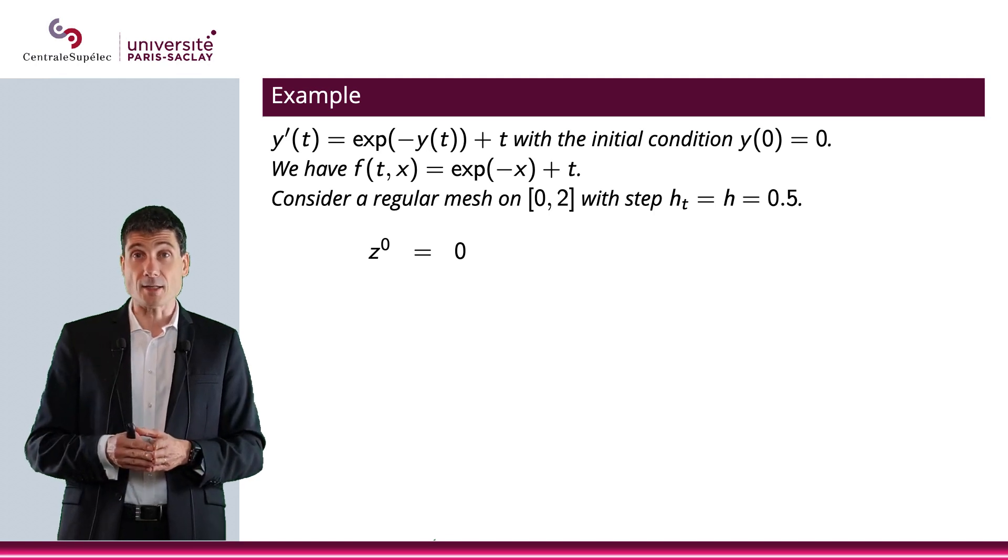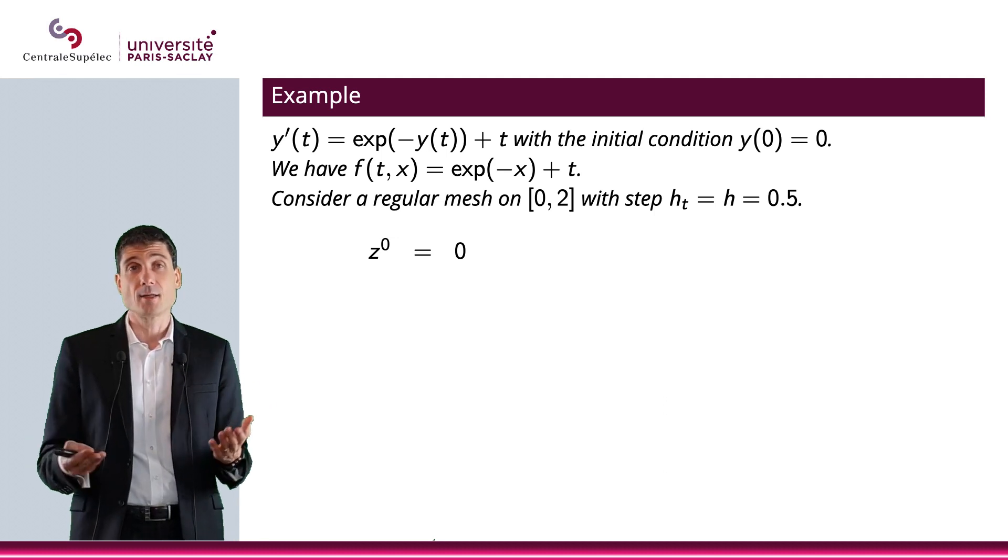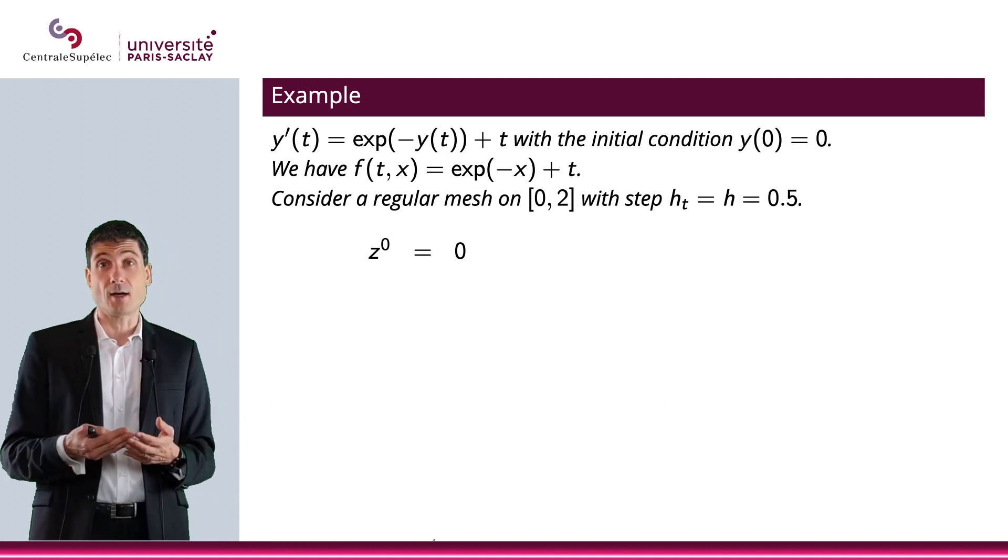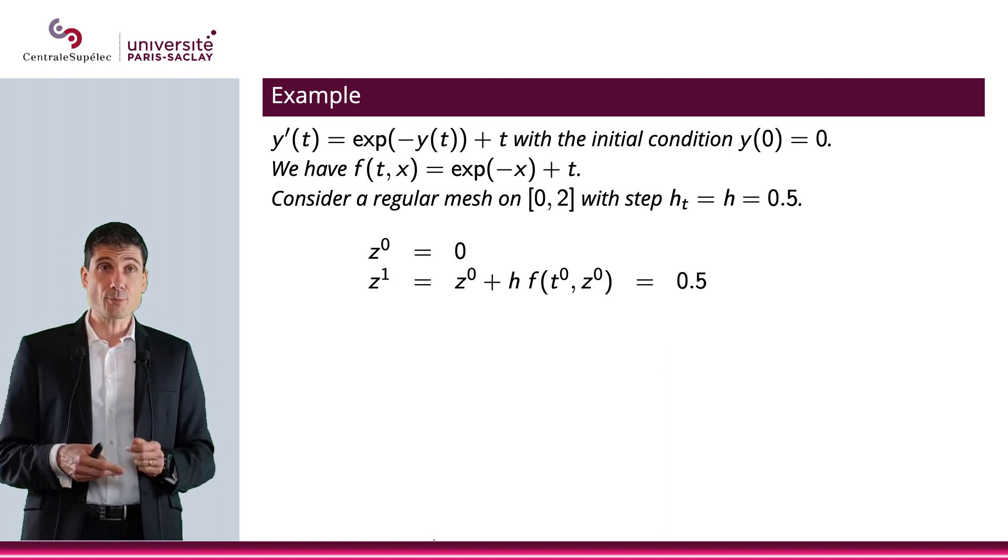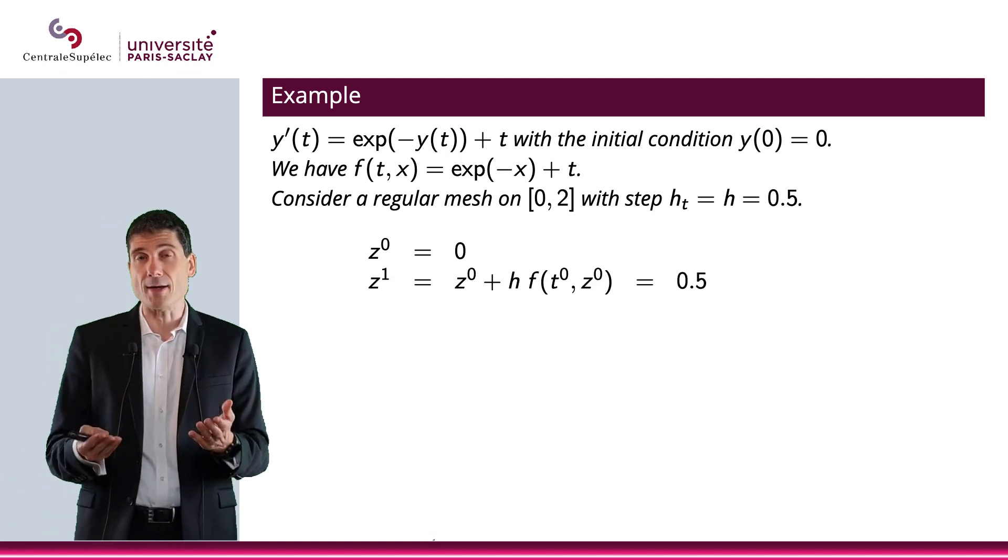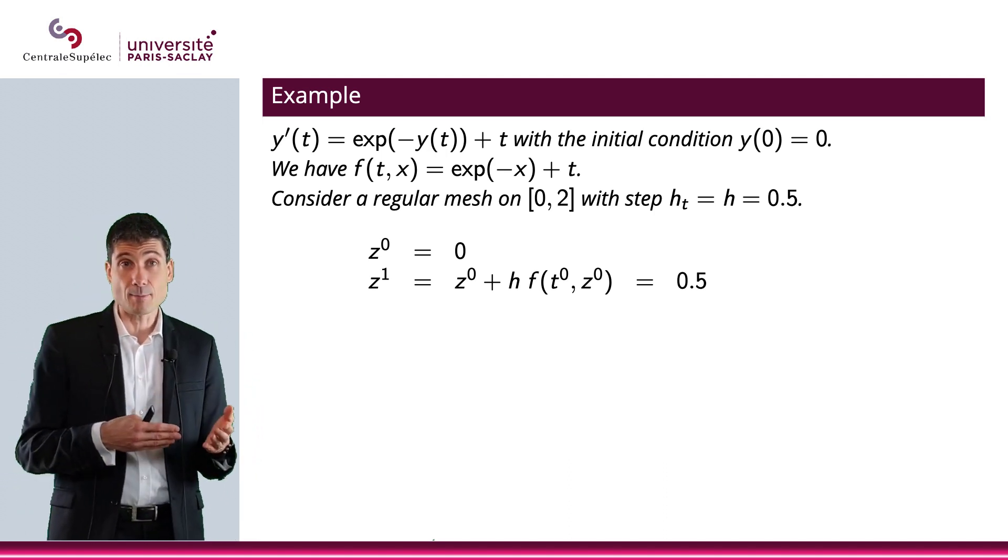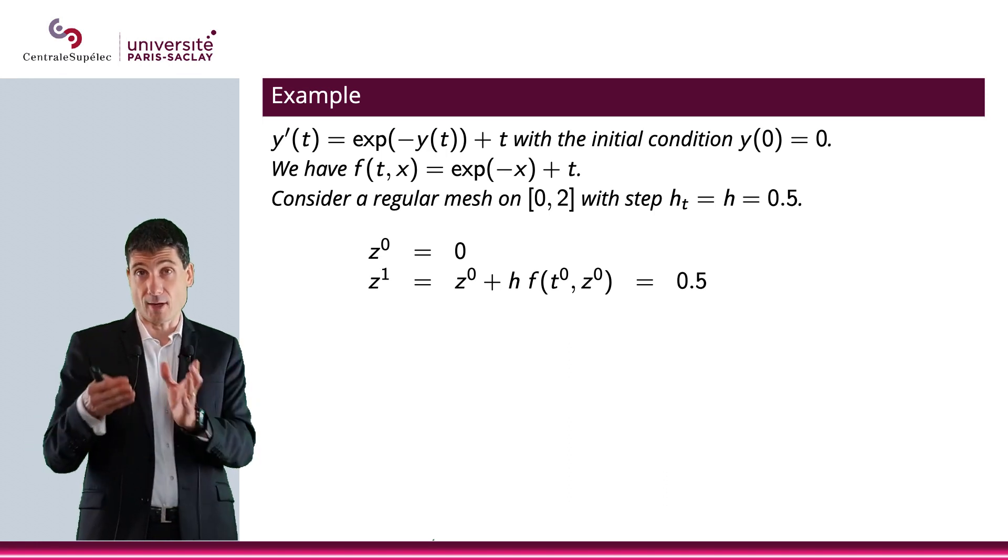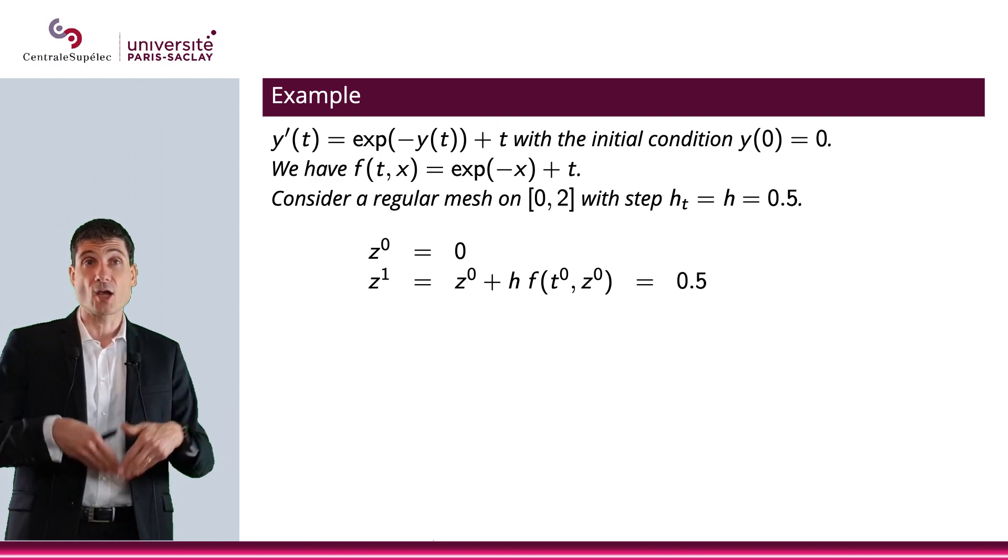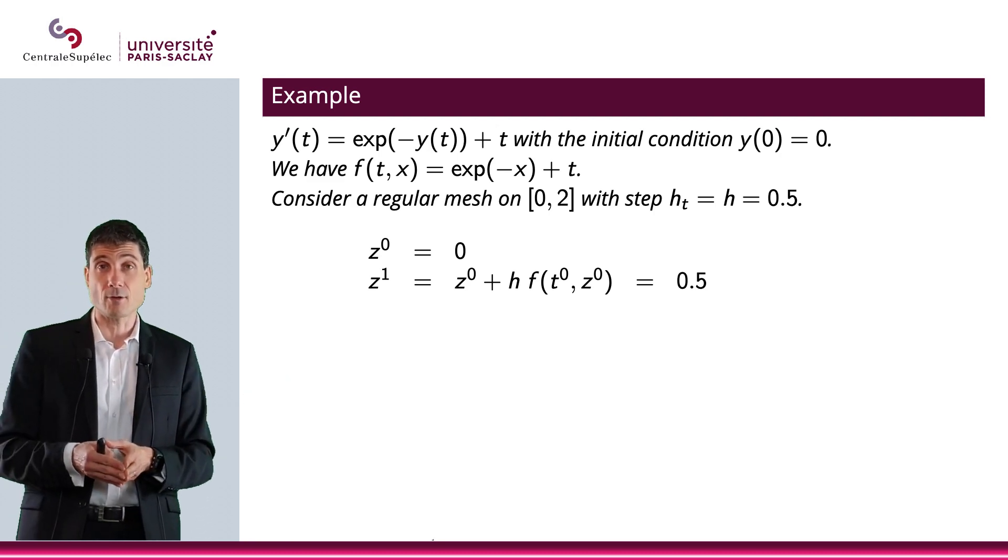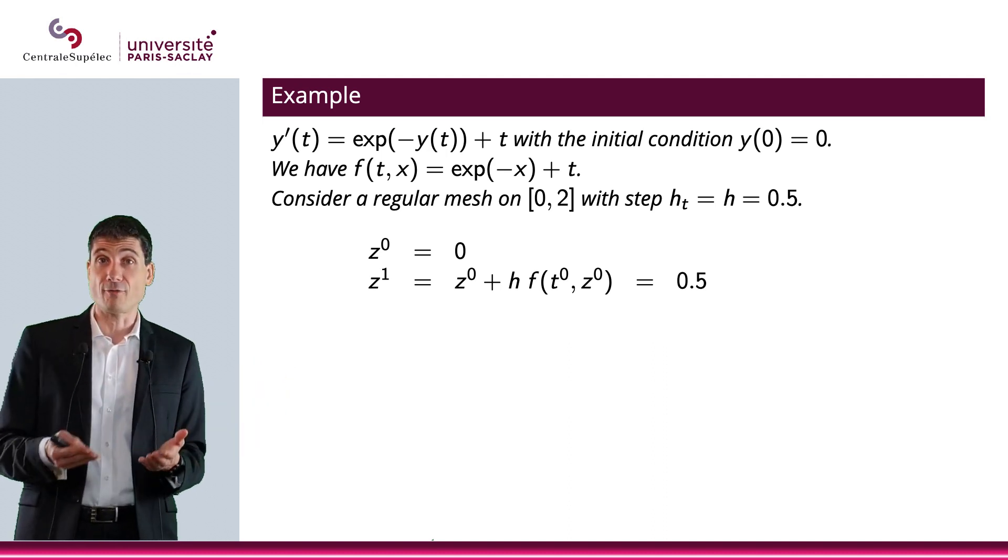Let's start with z0. So z0 is going to be y0, so that is 0. Now let's compute zn plus 1 with n equals 0. So that will be zn plus hf of tn, zn with n equals 0. So that means z1 is equal to z0 plus hf of t0, z0. Well, let me actually compute this. z0 is 0. h is 0.5. f of t0, z0. So t0 is 0. And when we have z0 equals 0, it means we basically plug in t equals 0 and x equals 0 in f tx. And that will give us 1. So what I end up with is 0.5.